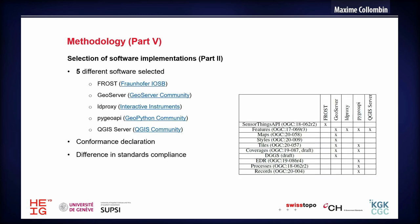Based on that, we opted for five different software solutions: FROST for the OGC SensorThings API implementation, GeoServer covering a broad range of OGC standards, LDProxy mostly serving OGC API Features, pygeoapi which is really active in the OGC process, and QGIS Server, a solution widely used in Switzerland. On the sketch on the right, you can see a matrix mapping every standard to every implementation — that's the state of the art of the software implementations, and it's still evolving. You can see there is a difference in standards compliance, which is why we aimed to cover a broad selection of implementations.